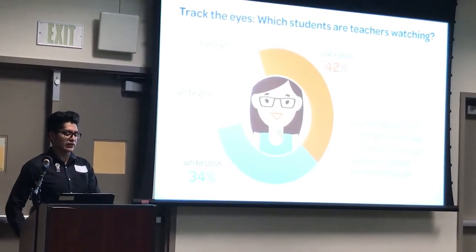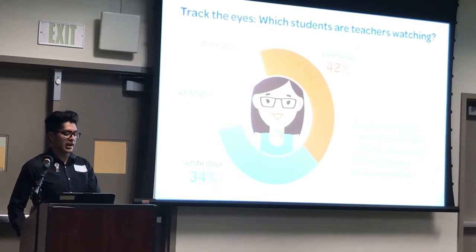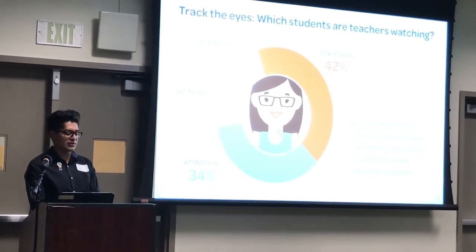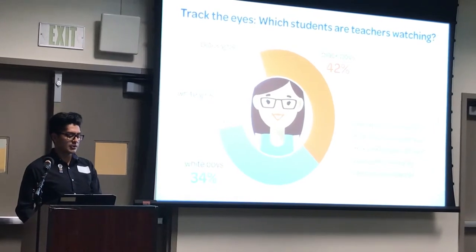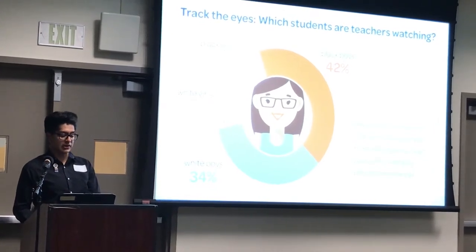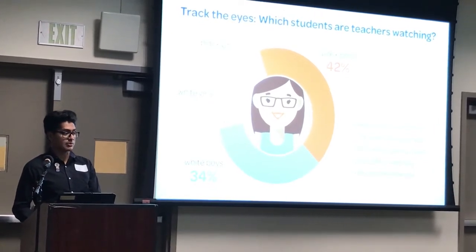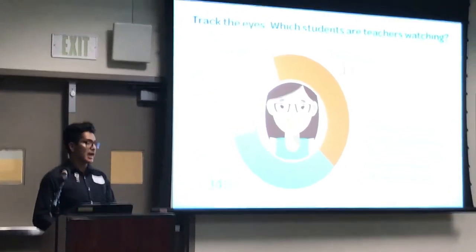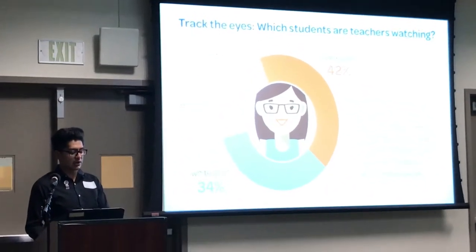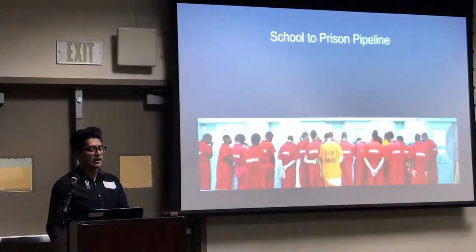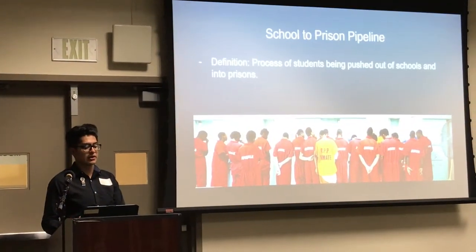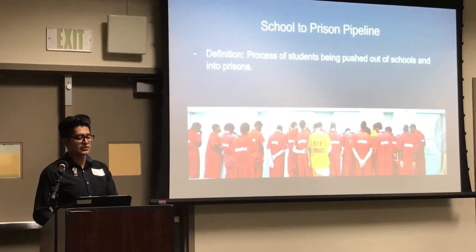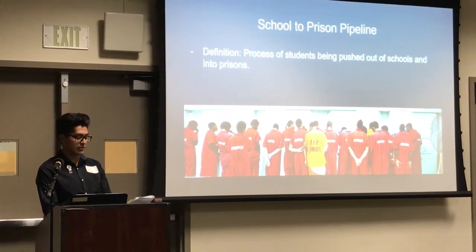The study concluded that teachers may have a higher standard of behavior for black children, who could be stereotyped as most likely to misbehave. This perhaps contributes to the racial disparity in discipline and high expulsion rates, where African-American students are exposed to the criminal justice system at a higher rate compared to any other ethnicity. This is defined by researchers as the school-to-prison pipeline, the process of students being pushed out of schools and into prisons.